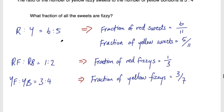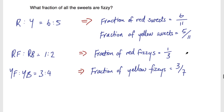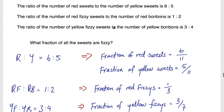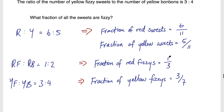So we've taken the ratios and changed them into fractions. The fraction of red sweets is 6 out of 11, yellow is 5 out of 11, and we have fractions for the fizzy sweets as well. The question asks what fraction of all the sweets are fizzy, so I want to find a third of 6 out of 11 to get the fraction of total sweets that are red fizzy sweets.